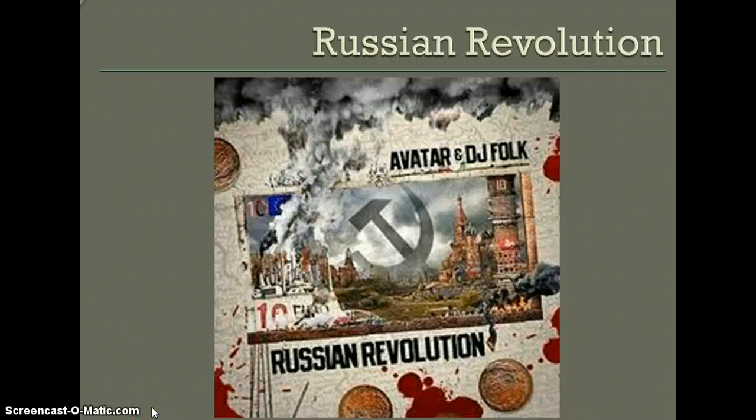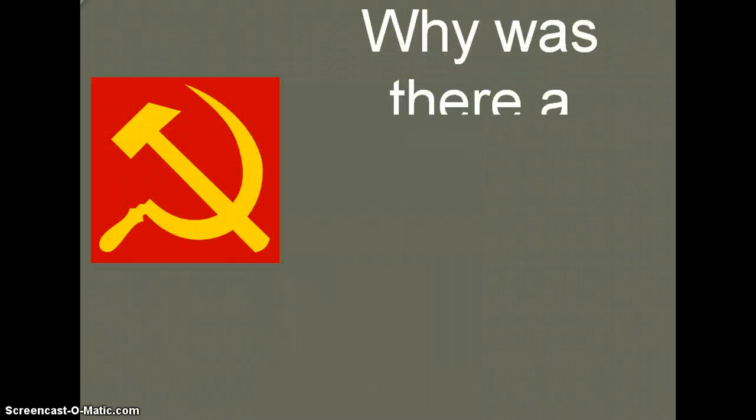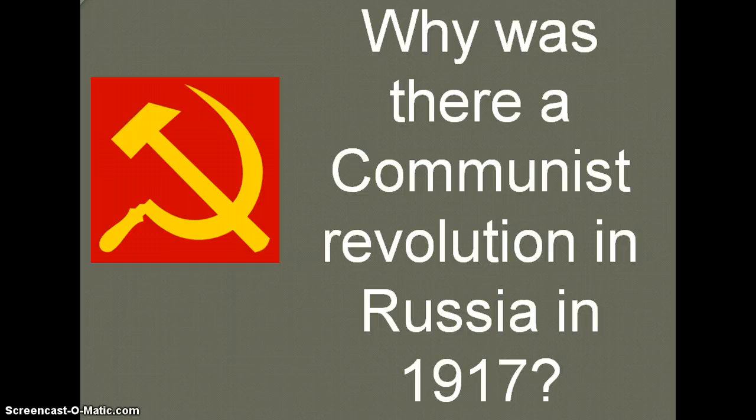This is the second in a series of short lectures designed to supplement and highlight important events in your reading. You should always take notes. This second lecture covers the causes of the Russian Revolution and what Russia looked like under its first communist leader. The question we will answer is why there was a communist revolution in Russia.